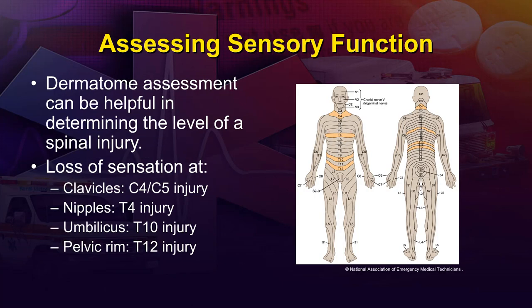If you have a dermatome chart, use it to loosely associate injury site with the patient's lack of sensation or line of demarcation. Some easy landmarks to memorize: loss of sensation at the clavicles corresponds to a C4-C5 injury; at the nipple line, a T4 injury; at the umbilicus, a T10 injury; and at the pelvic rim, a T12 injury. These landmarks make the overall dermatome chart much easier to use in the field.